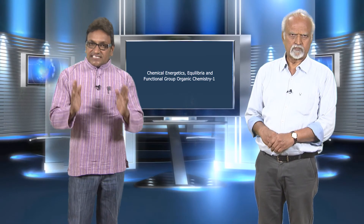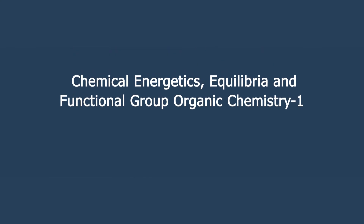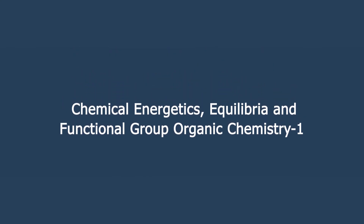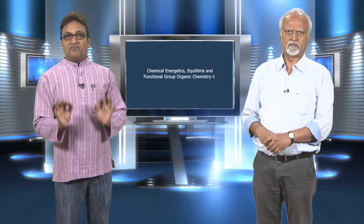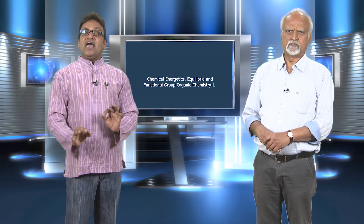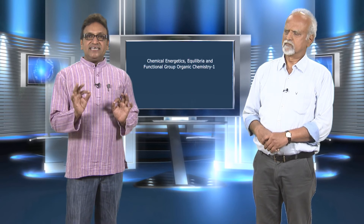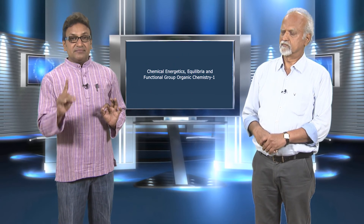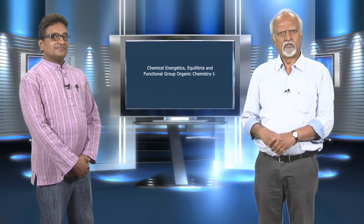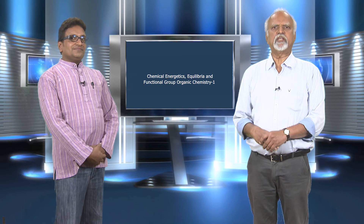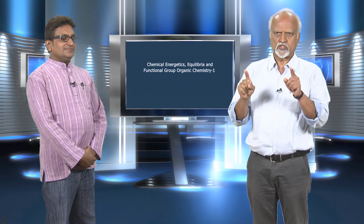The successful completion of this course titled Chemical Energetics, Equilibria and Functional Organic Chemistry 1 would make you earn 4 credits according to the Choice Based Credit System curricula for B.Sc. Chemistry as well as B.Sc. in Physical Science with Chemistry as one of the main subjects. I hope you will enjoy this new learning experience with us. So, get registered now!